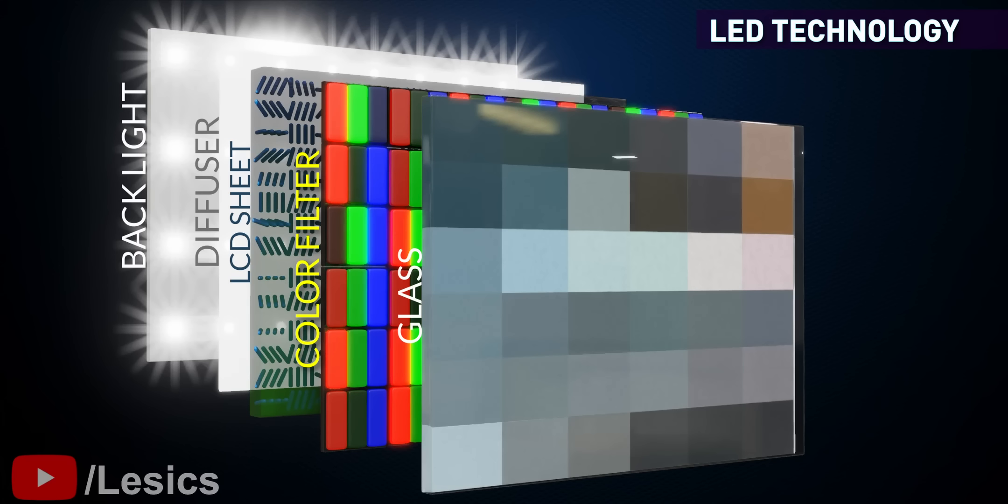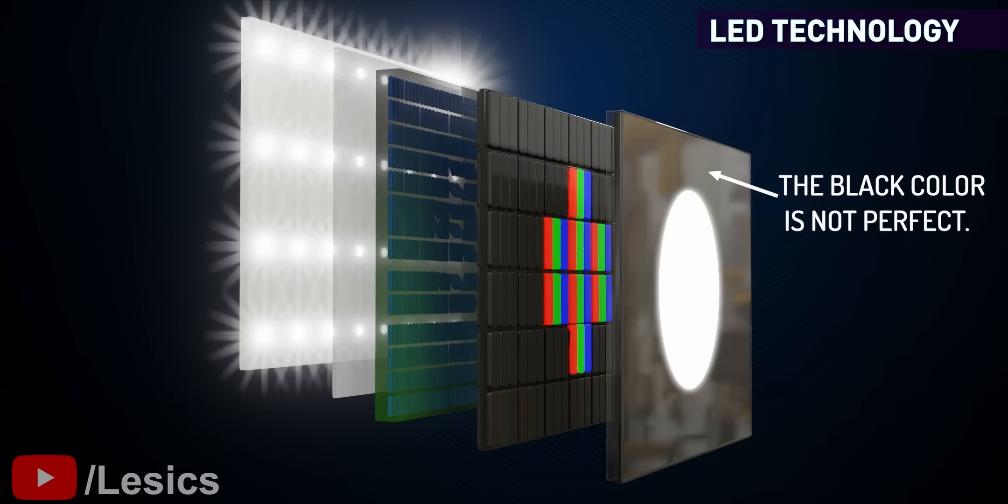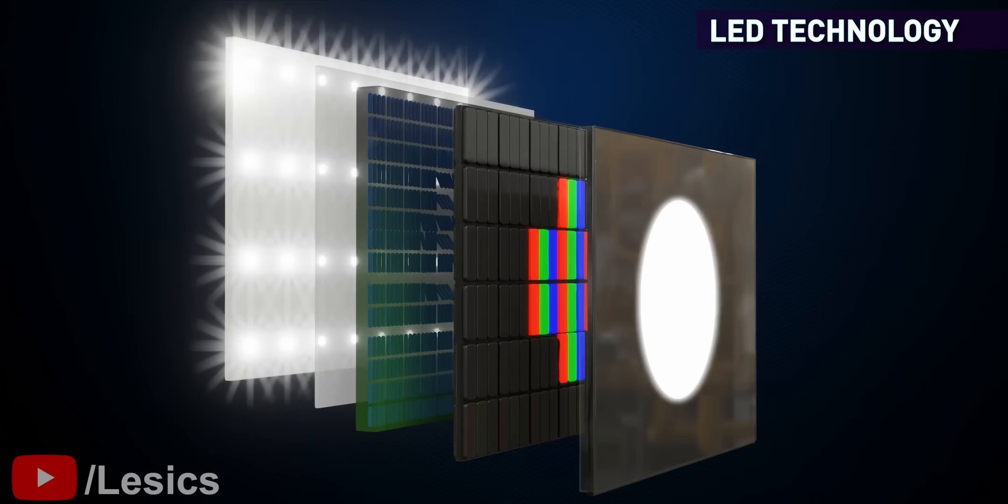There are several disadvantages of this display technology. The color reproduction is not that accurate. For example, when we try to produce a perfect black color using this technology, this is what we get. This is due to the continuous backlight being on in the background. The energy consumption in those display types is quite high because of the common light source for all the pixels.